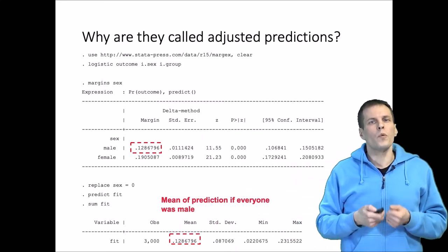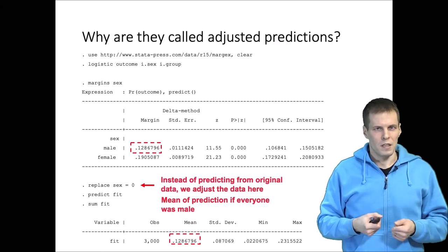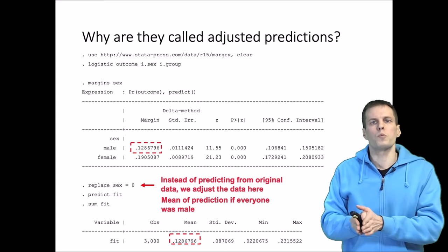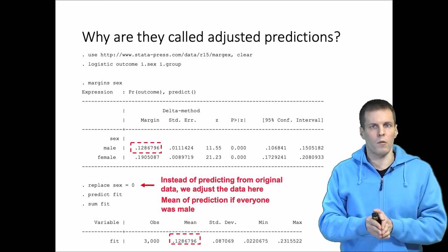So basically we are adjusting all the observations. The idea is that we adjust all the observations first to be men, we calculate predictions, we calculate average prediction, we store that value.